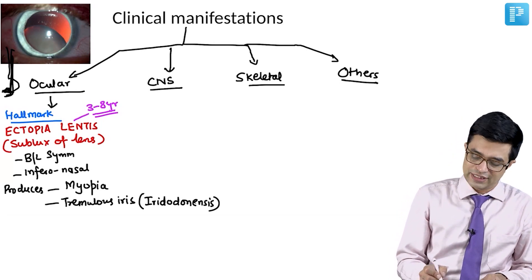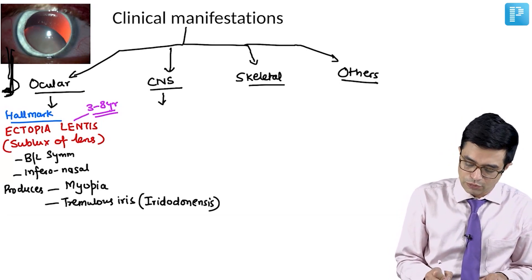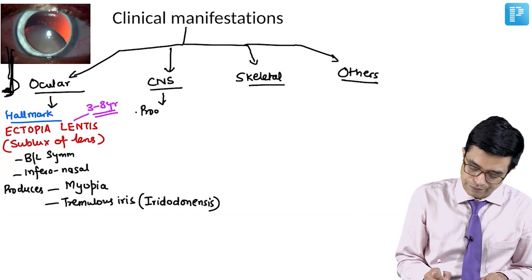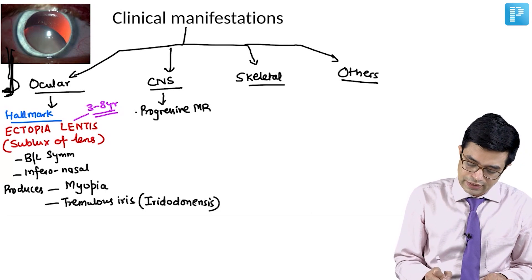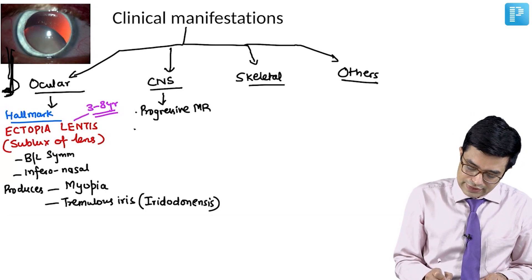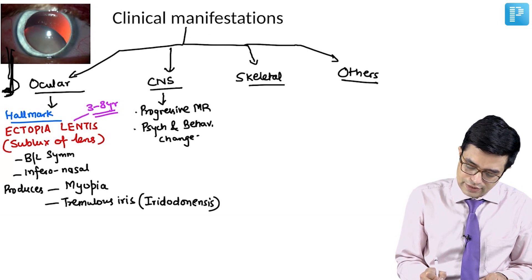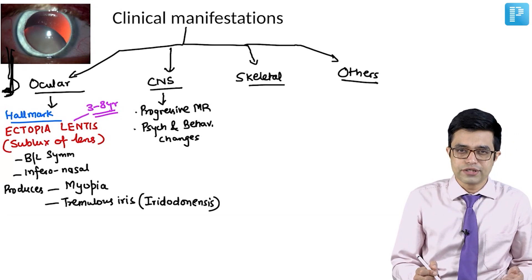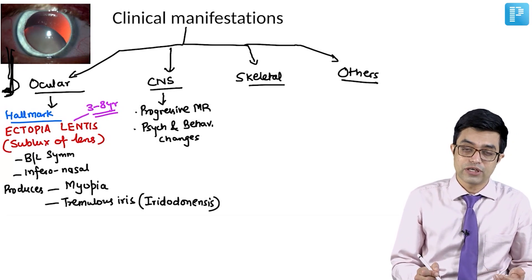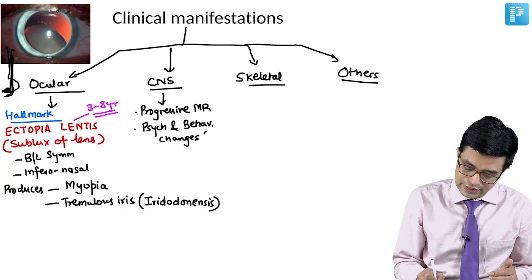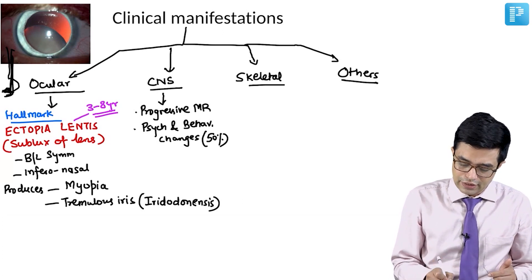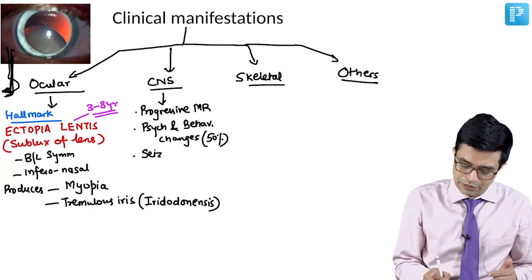Then you have the CNS involvement. CNS involvement will be in the form of progressive intellectual dysfunction or mental retardation. There will be psychiatric and behavioral changes. These may include subtle behavioral changes or frank conditions like autism and ADHD or depression or related disorders which are seen in as high as 50% of the patients. You may also find seizures to be present in 20% of these patients.